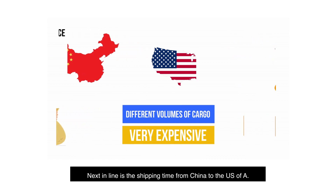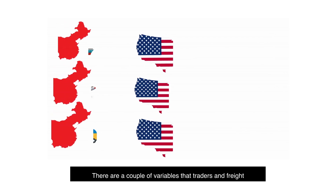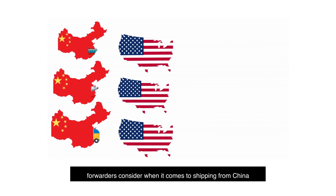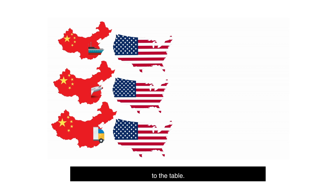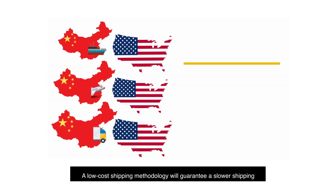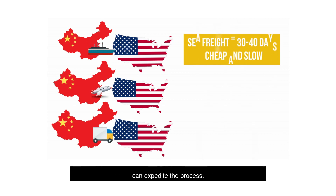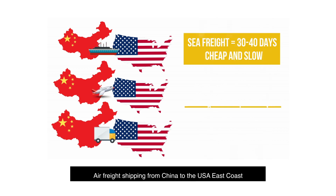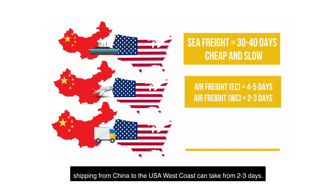Next is the shipping time from China to the U.S. There are a couple of variables that traders and freight forwarders consider when shipping from China to the United States. However, all of them are influenced by how much you can bring to the table. A low-cost shipping methodology will guarantee a slower shipping process, but a little nudge in the shipment costing can expedite the process. Air freight shipping from China to the U.S.A. East Coast may take four to five business days. However, shipping from China to the U.S.A. West Coast can take from two to three days.